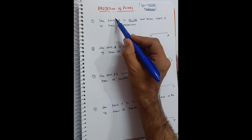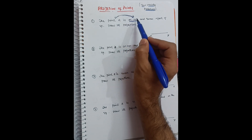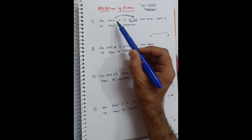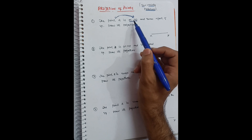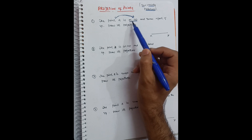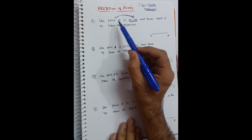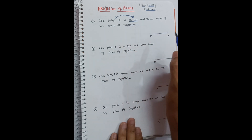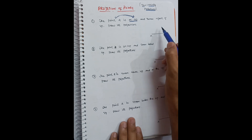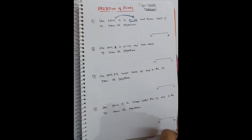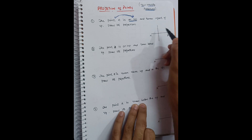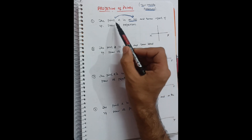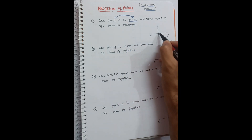Here is the key rule to remember: whenever the relationship of a point is with HP — whether on HP, above HP, or below HP — you have to draw the front view. So for this problem, point A is on HP, which means we draw the front view on the reference line. Draw the reference line first. Since the point is on HP, it lies on the reference line, so the front view goes there. The front view is represented with a dash — so this is A-dash, your front view.